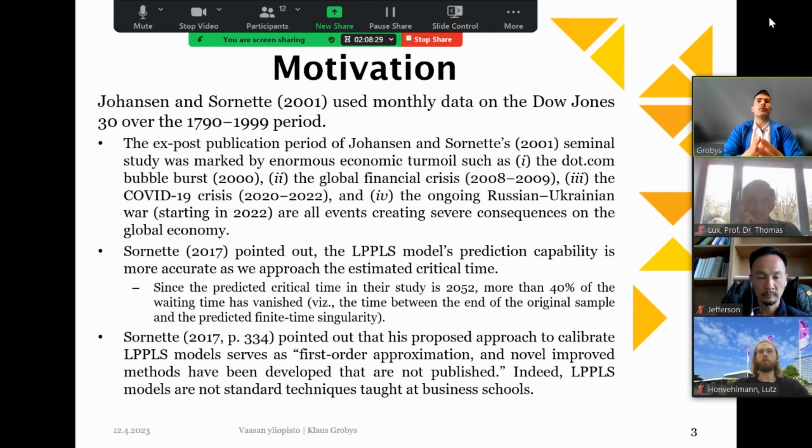In their 2001 paper, the authors used monthly data on the Dow Jones 30, covering the period 1790 until 1999. But in the ex-post publication period of their seminal study, some extraordinary economic events have happened. For instance, in the early 2000s, we have observed the burst of the dot-com bubble. Then we also evidenced the global financial crisis period, which had a severe impact on the global economy. And now we have experienced the COVID-19 crisis, where we observed huge drops in financial markets all over the world. And now we still have the ongoing Russian-Ukrainian war that started last year, which is still an unresolved conflict. All of these events had severe consequences on the economy.